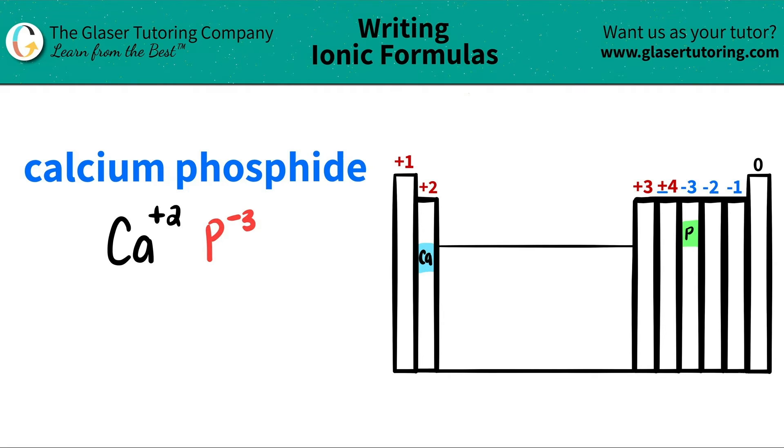Now I have the two components or the two elements. I take these charges and I do this trick where I crisscross them to determine how many of each element I need in my formula.